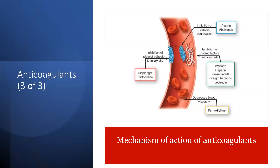The mechanism of action of anticoagulants: to prevent clot formation, we inhibit platelet adhesion at the injury site using clopidogrel. Aspirin or eptifibatide (epsixamab) inhibit platelet aggregation. Inhibition of clotting factors and cascades is controlled by warfarin, heparin, low molecular weight heparins, and lepirudin. Decreased blood viscosity is achieved by pentoxifylline.